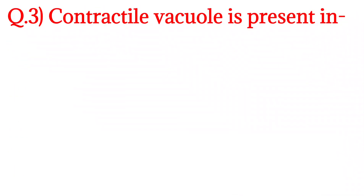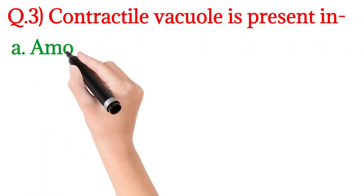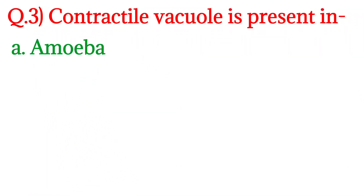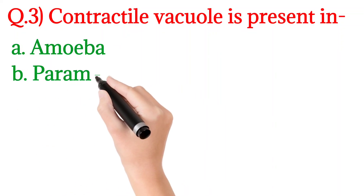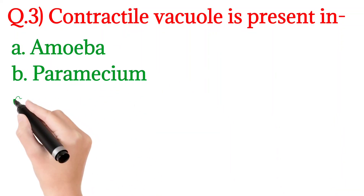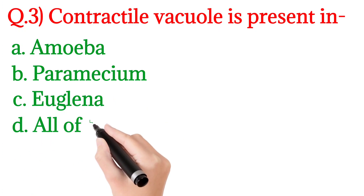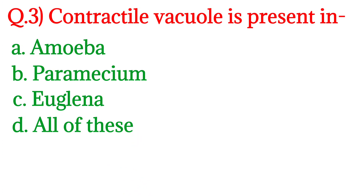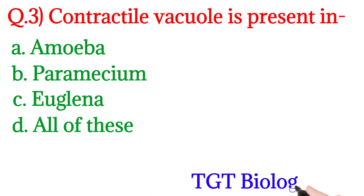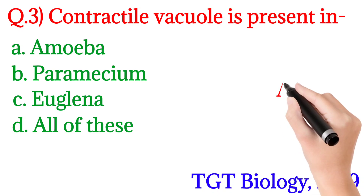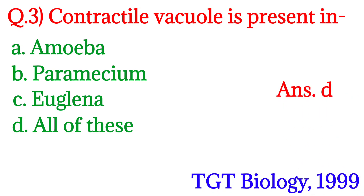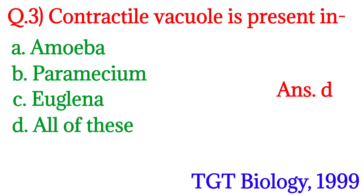Question 3: Contractile vacuole is present in? Option A: Amoeba, Option B: Paramecium, Option C: Euglena, Option D: All of these. This question was asked in TGT Biology 2019. The answer is Option D: All of these. Contractile vacuole is found in Amoeba, Paramecium and Euglena, all of them.